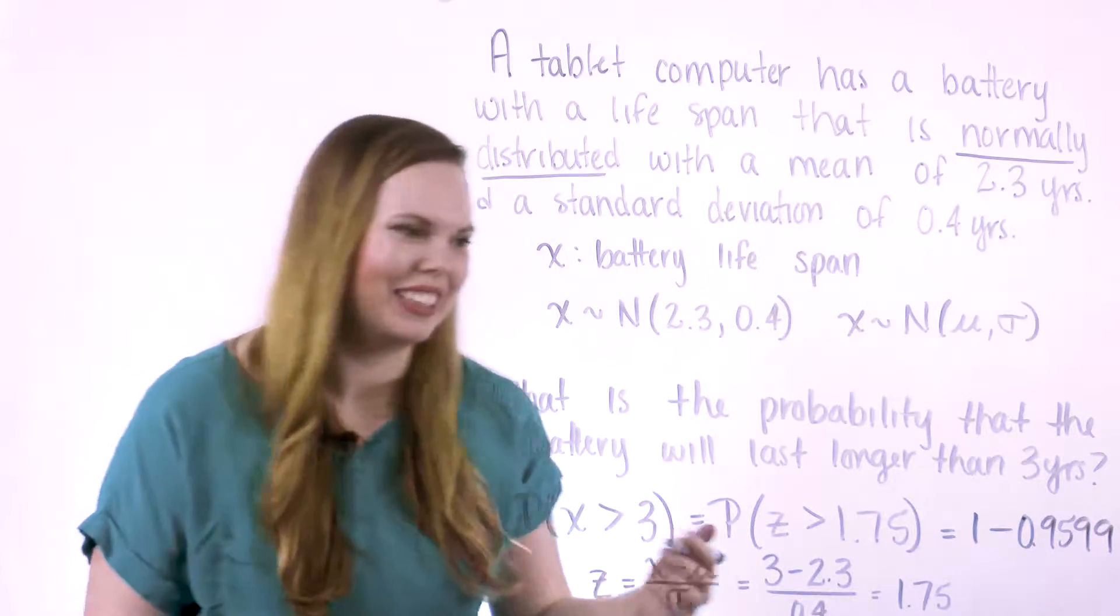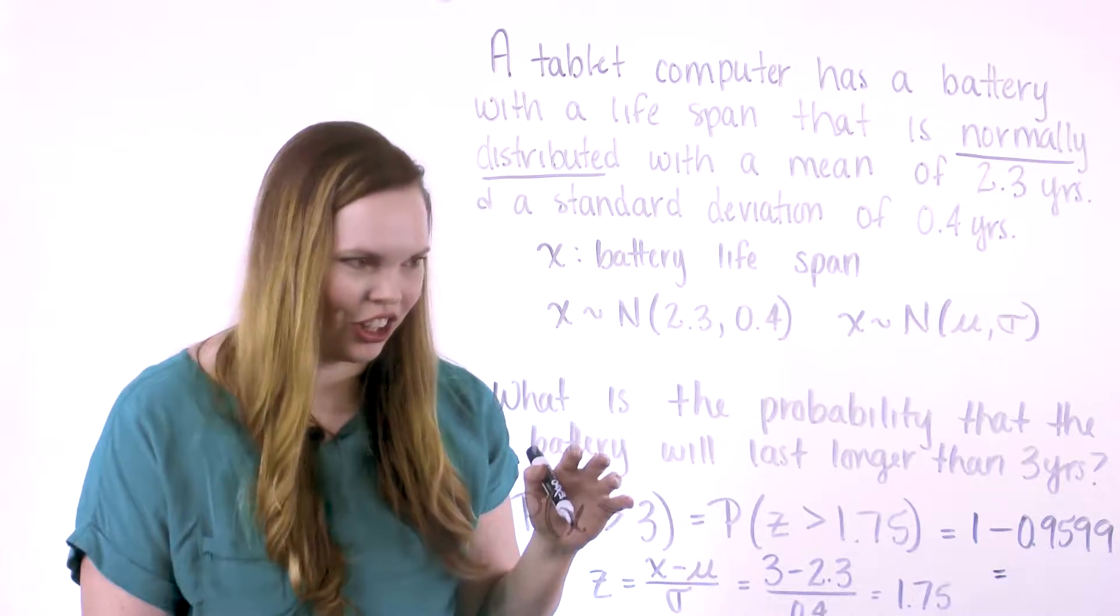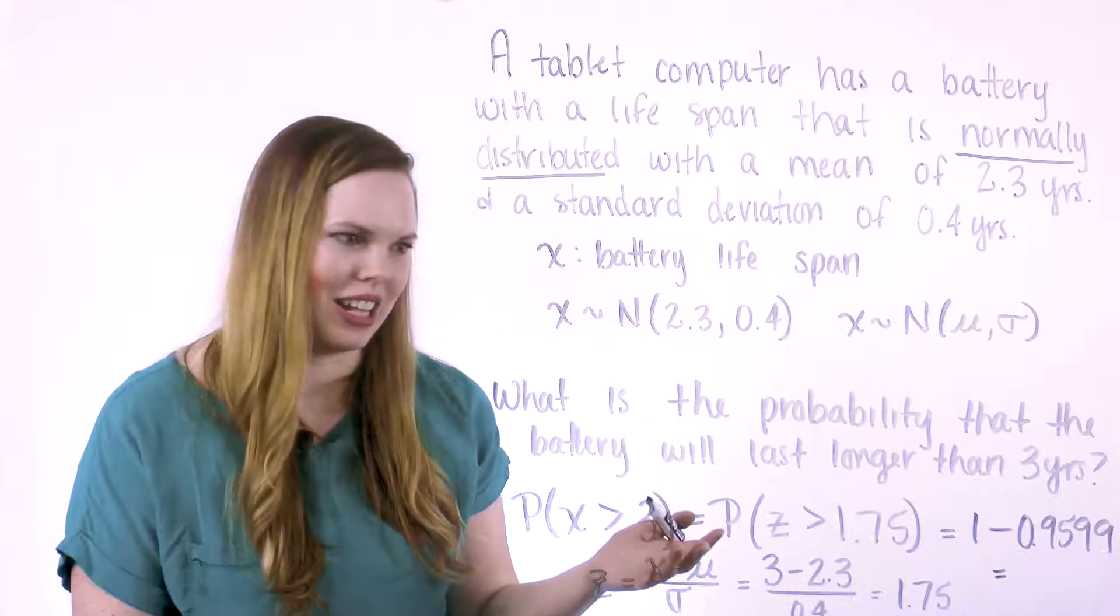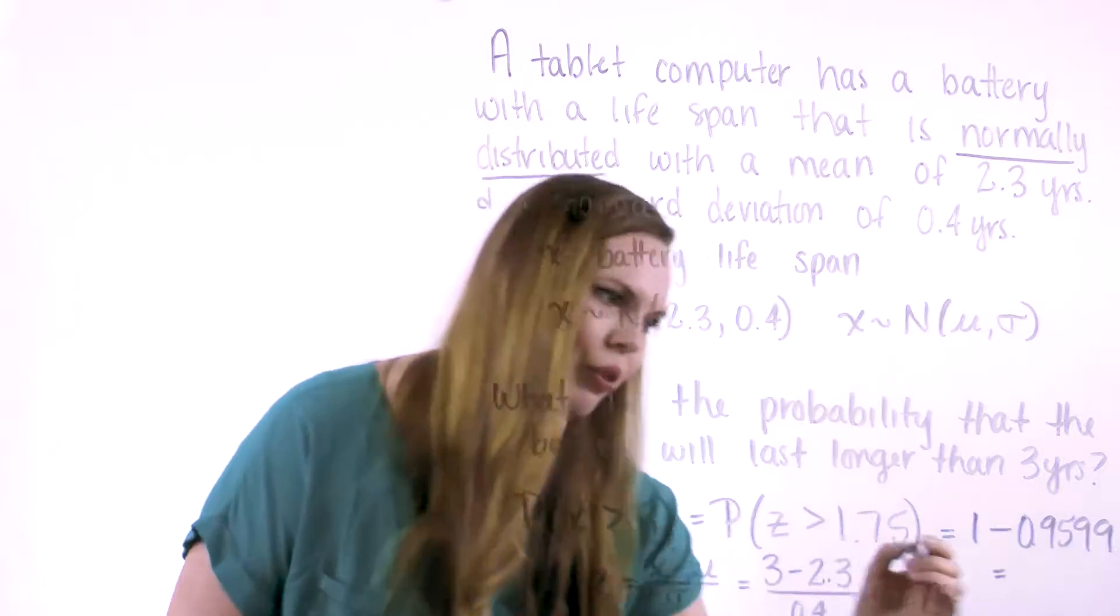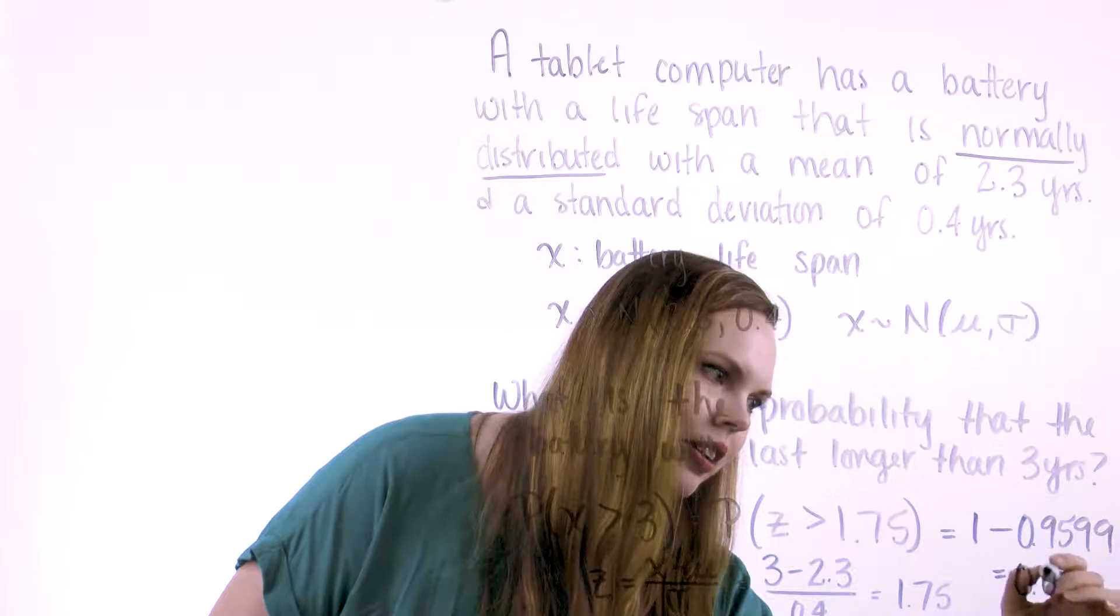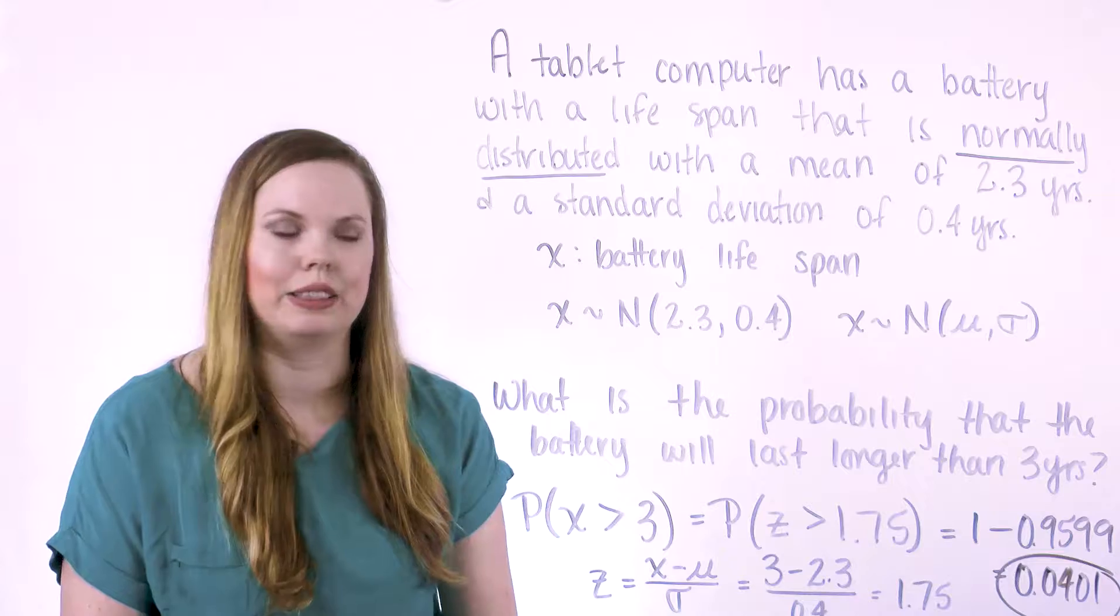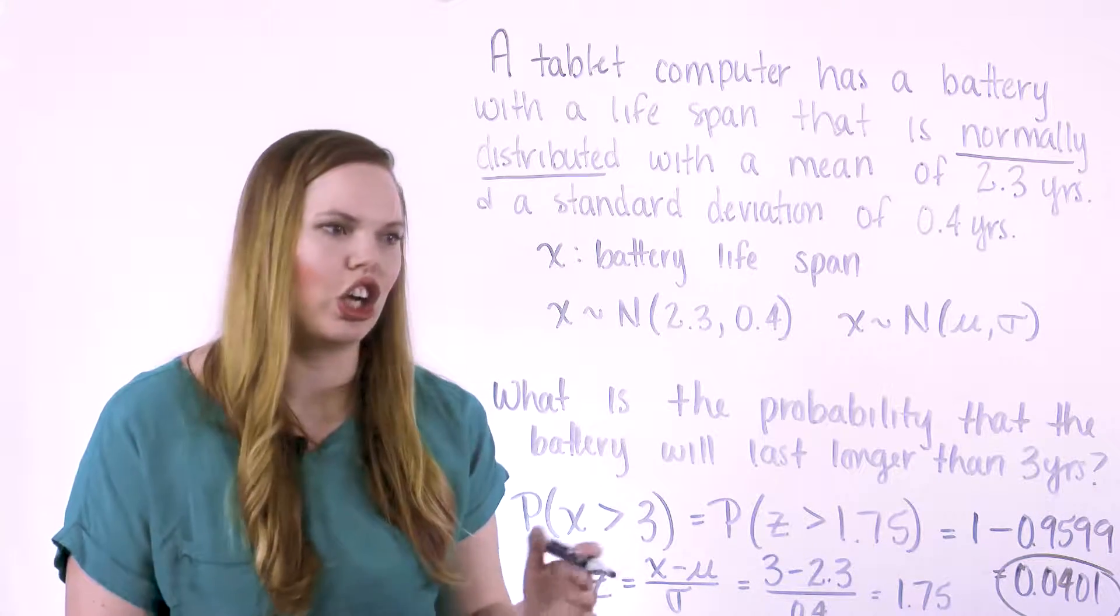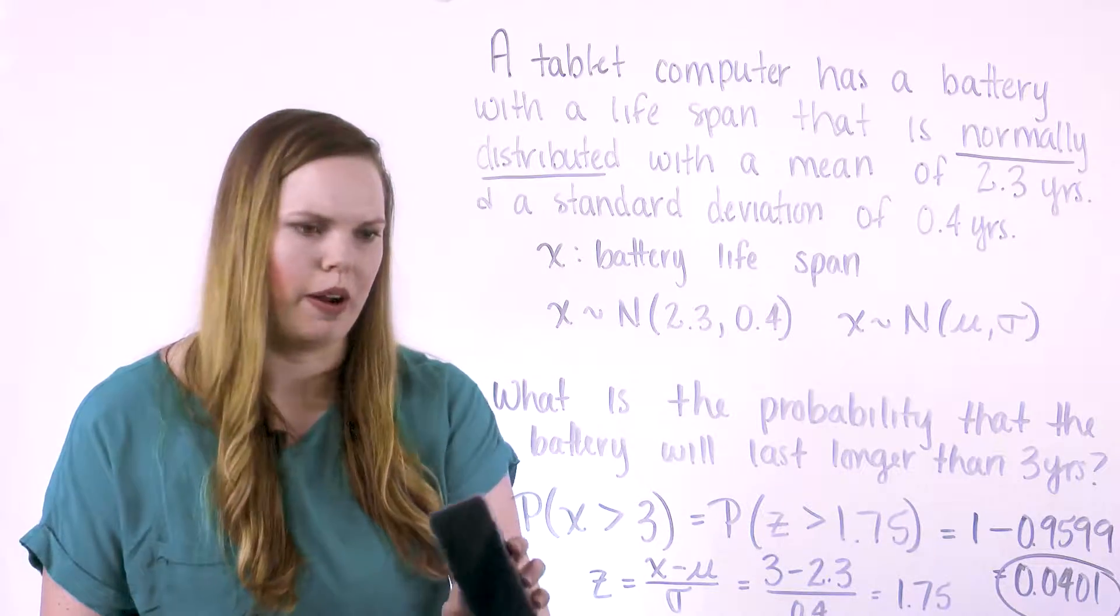And then you'll do that subtraction, and you'll get the area to the right. Because this is the area, the left, the whole area underneath the curve is 1. So if we take 1 minus the area to the left, we get the area to the right, which is 0.0401 here. So that is the probability that our battery will last longer than 3 years.